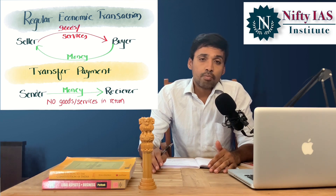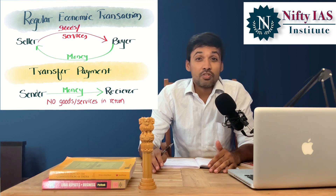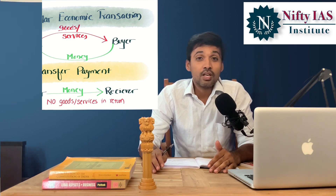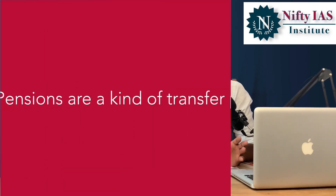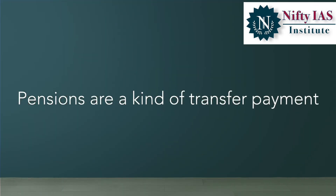Consider old age pension, where state governments transfer some amount of money to aged people as pension. The state government gives money to aged people, and in return, there are no goods or services received. Such a payment is called a transfer payment.